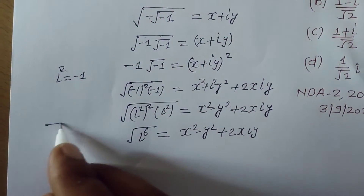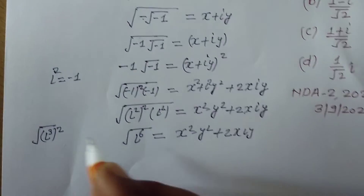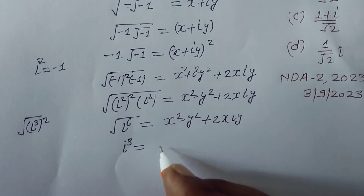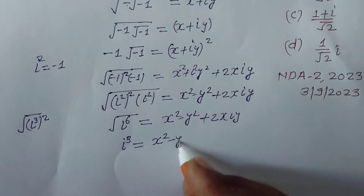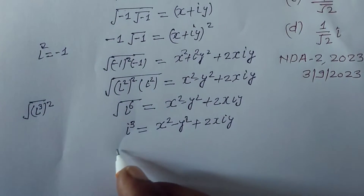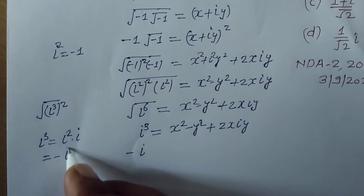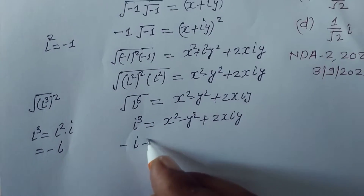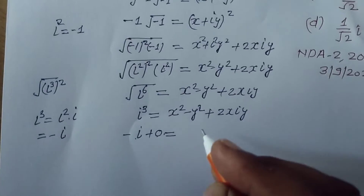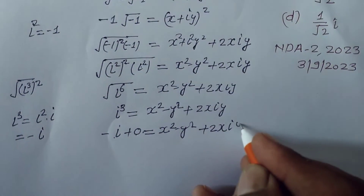Simplifying i³ · i³ = i⁶, and since i³ = i² · i = −i, the left side becomes −i. Writing this as 0 + (−i), we identify 0 as the real part and −1 as the imaginary part coefficient, giving 0 + (−i) = x² − y² + 2x·iy.